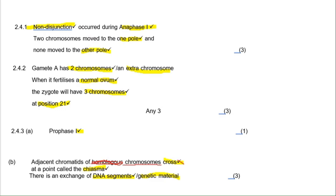That's how strict they mark at end of year — please memorize 'homologous chromosomes' for any meiosis question. Also remember: meiosis is only in Paper 2, so don't study meiosis for Paper 1. Quick takeaways for meiosis: always study the phase number, always study the disorders, and always write 'homologous chromosomes.' If you write 'chromatids' or just 'chromosomes,' that is incorrect — homologous chromosomes is always correct.